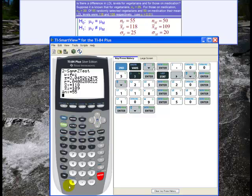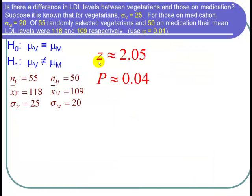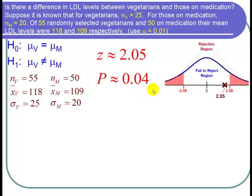So let's go back to the PowerPoint. Okay, so we have a z, which was about 2.05. And we have a p-value, which was about 0.04. And if you remember, we had our z-critical values of about negative 2.58 and positive 2.58.